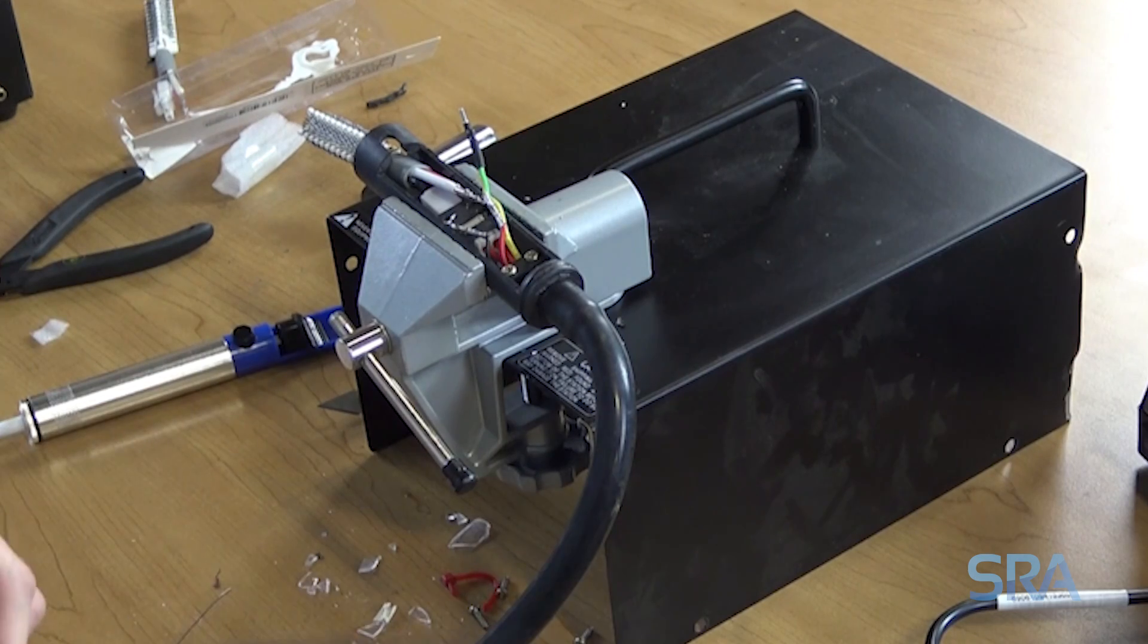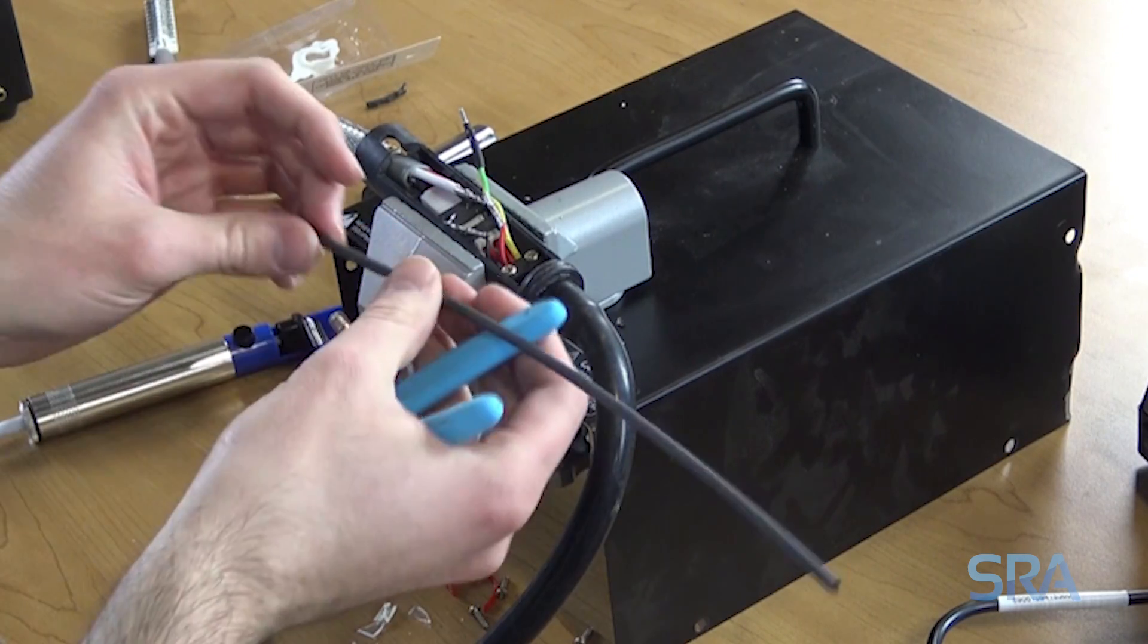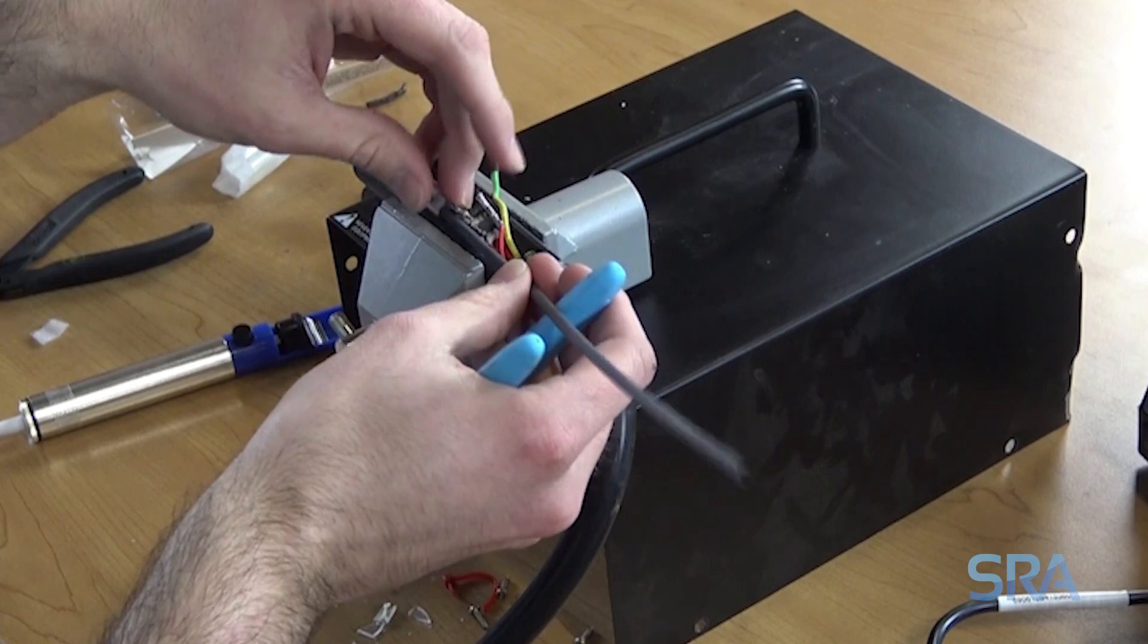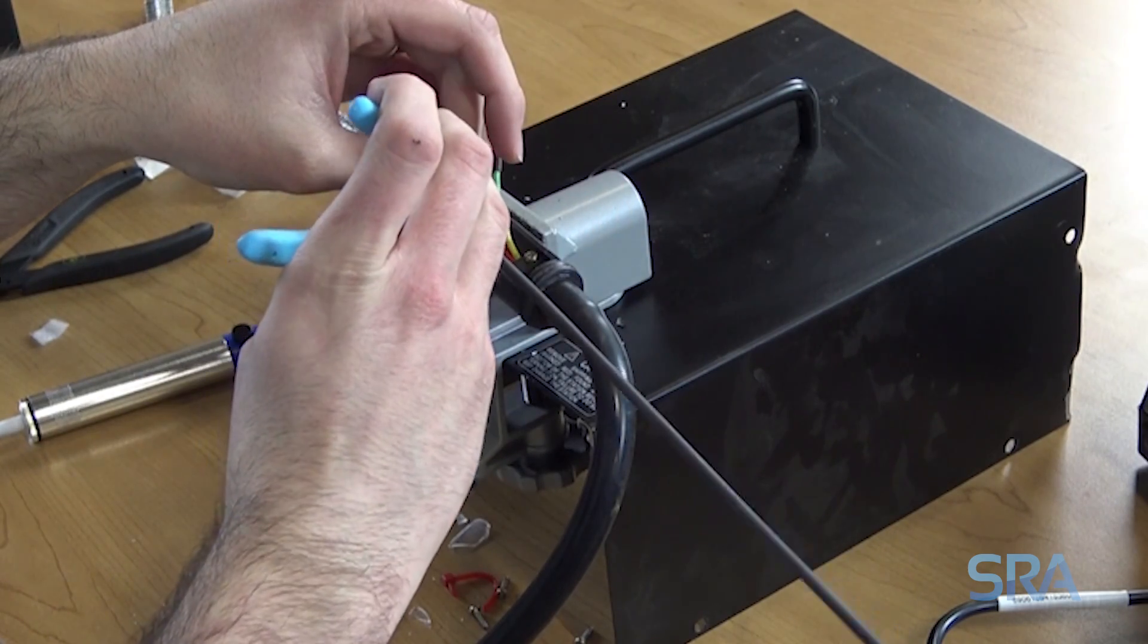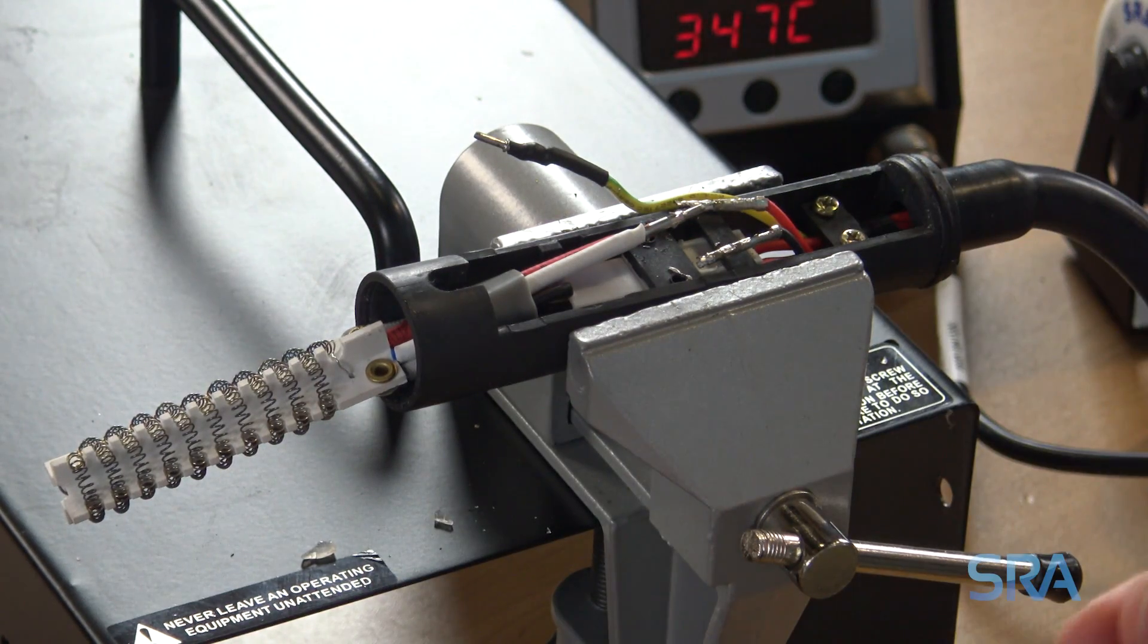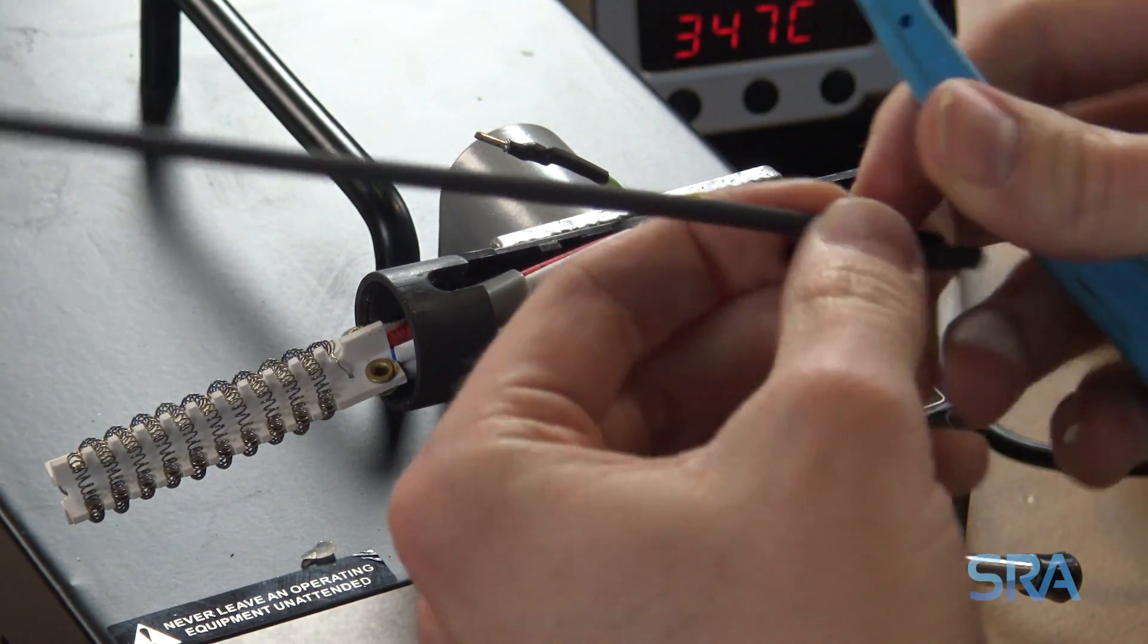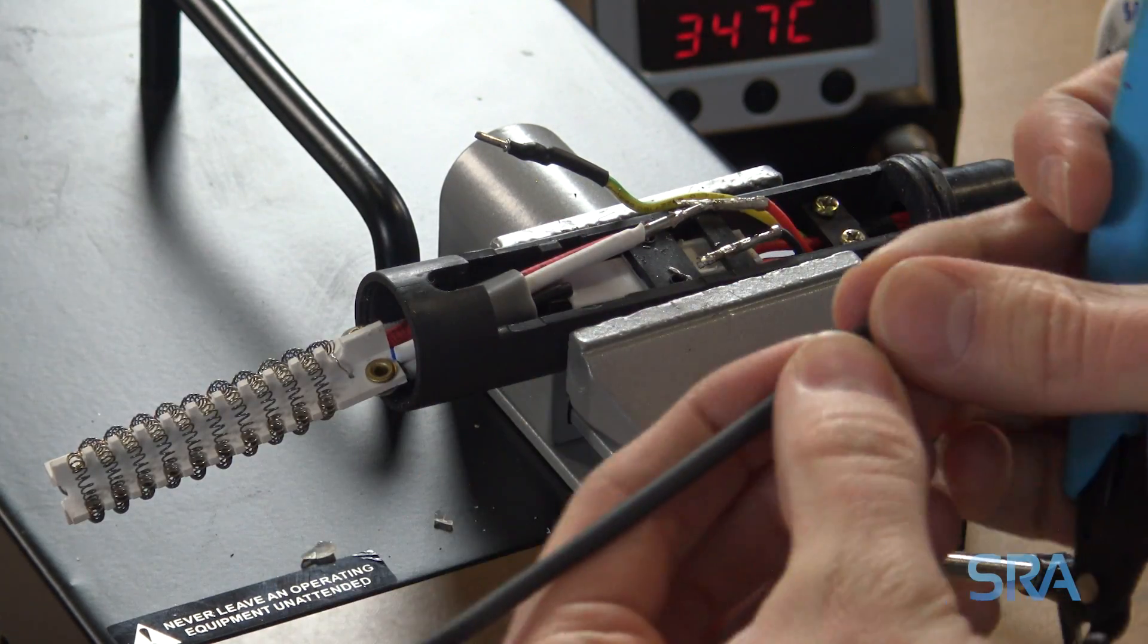Now we're going to cut our heat shrink. Use the existing connectors as a guide. I can cut a matching piece.